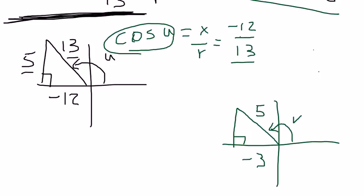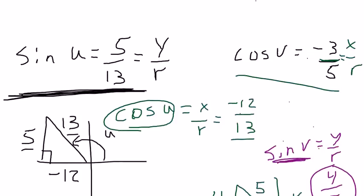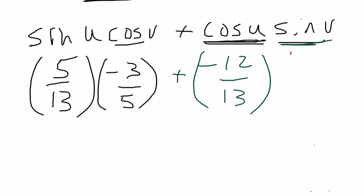Again, using Pythagorean theorem, 5 squared is 25, 3 squared is 9. If I subtract them, I get 16. So this value right here will be 4. So the sine of v is going to be y over r, or 4 fifths. And where I see sine of v up above, I'm going to substitute that in, 4 fifths.